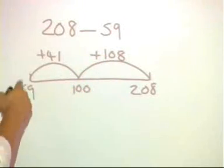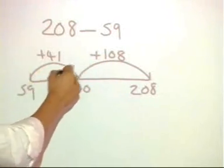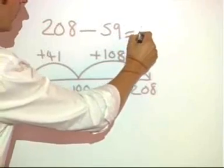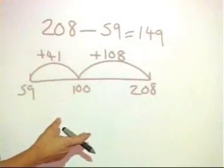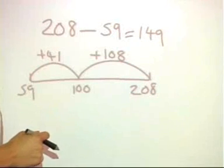By combining those two numbers together, 108 plus 41, I find the difference of 149. So it becomes far more efficient and also a good mental method as well.